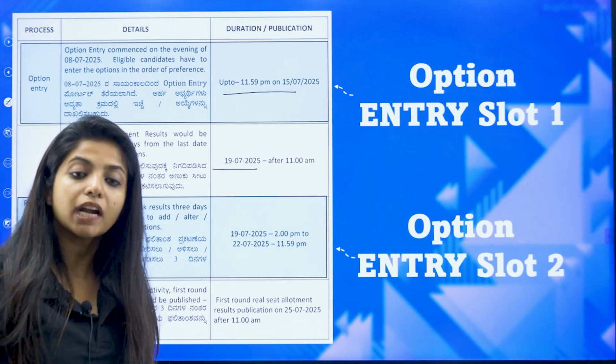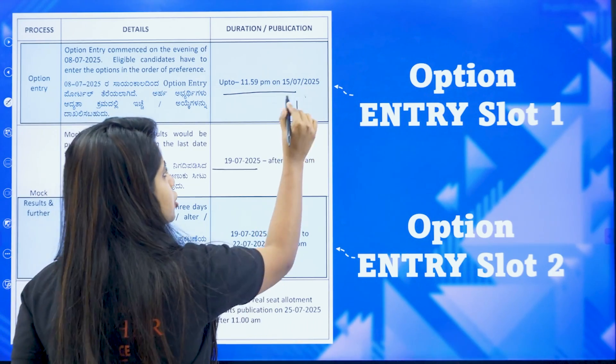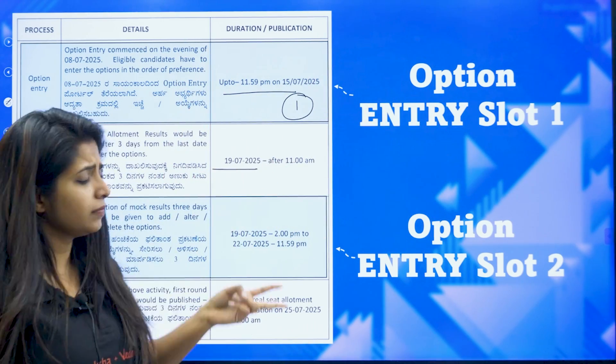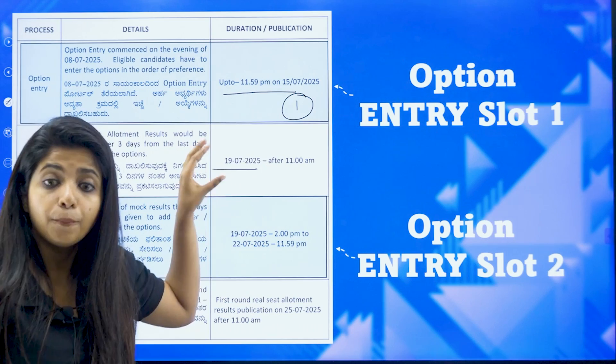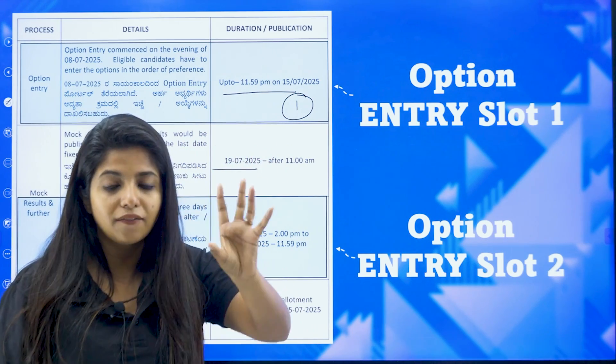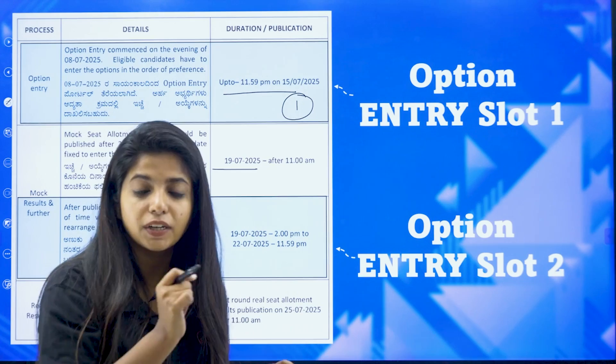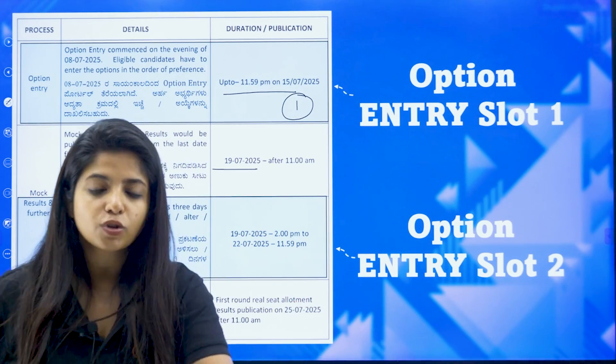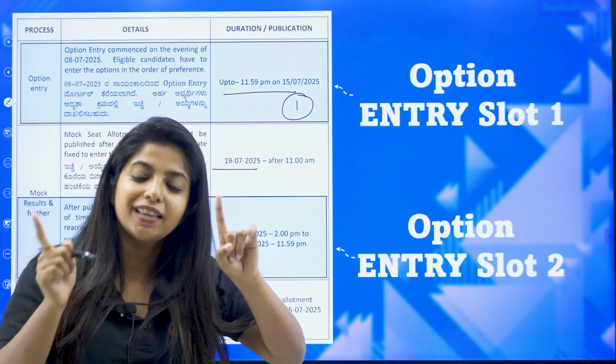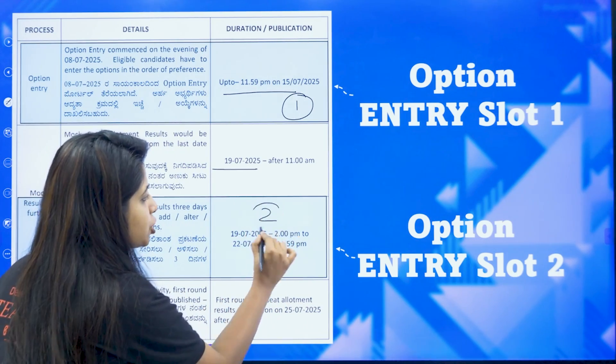Then you will get one more chance. So this was the first chance for you, that is option entry slot 1 where you filled in all the things. Now you got the second chance post the result. Once you got the result, you got to understand, oh my God, I should not have done that mistake. I should have added this particular college also. I should have removed this college. I should have changed certain numbers here and there.